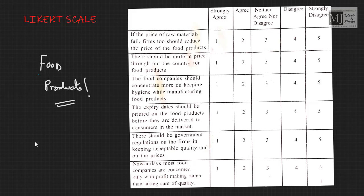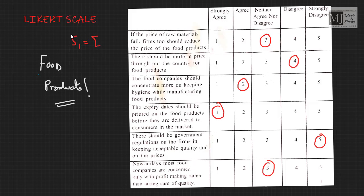Once the table is prepared, each respondent is asked to circle their opinion or score against each statement. The final score for the respondent on the scale is the sum of their ratings for all the items. Adding all responses for a given sample gives the total sum of responses for that respondent.